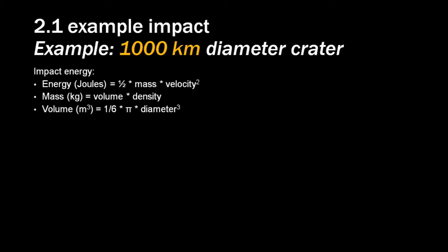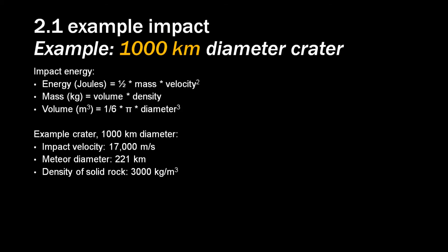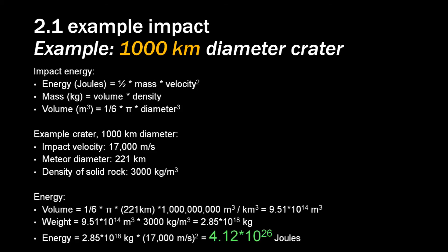Let's calculate a second example. We're going to calculate the energy involved in an impact causing a 1000 km diameter crater. That's huge! But remember, we do find craters like that on the Moon and other planets. Here you see formulas for calculating the energy in an impact. We're going to keep the speed and density of the meteorite the same as for the previous example. In that case, you would need a meteorite with a diameter of 221 km.